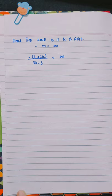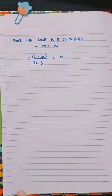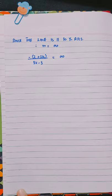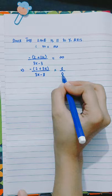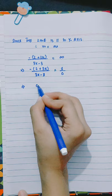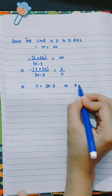Since the line is parallel to the y-axis, we know that the slope of the y-axis is infinity. So we compare the slope: minus 2 plus 3k divided by 3k minus 3 equals infinity, which we can write as 1 divided by 0. Cross-multiplying: 0 equals 3k minus 3.